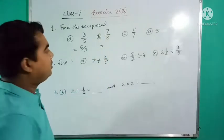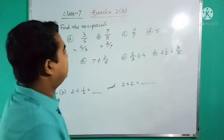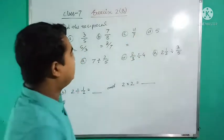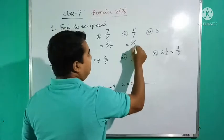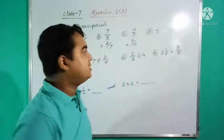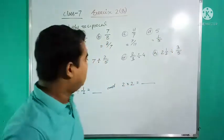Similarly, 7/8 reciprocal is 8/7, and 11/7 reciprocal is 7/11. Five means 5/1, so its reciprocal is 1/5.